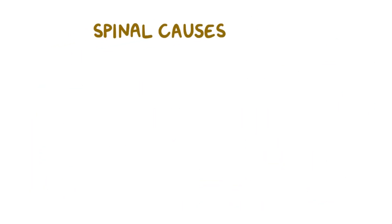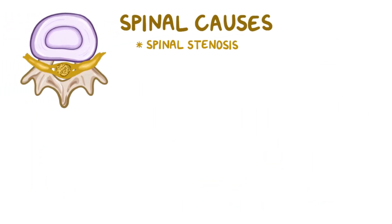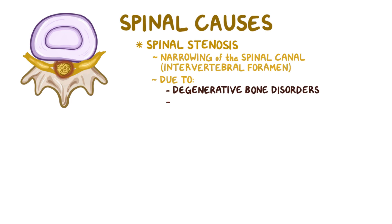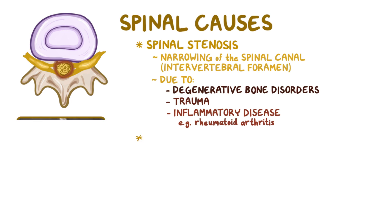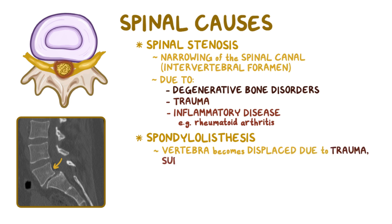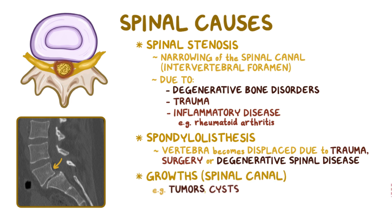Another cause of nerve compression is spinal stenosis, which is the narrowing of the spinal canal or intervertebral foramen. This is often due to degenerative disorders of the bone, trauma, or inflammatory diseases like rheumatoid arthritis. Spondylolisthesis is a condition where one vertebra slips or becomes displaced due to trauma, surgery, or degenerative spinal disease and presses on the nearby nerve roots. Finally, any growths within the spinal canal like tumors, cysts, or abscesses can cause compression of the spinal nerves.